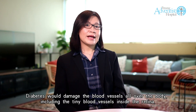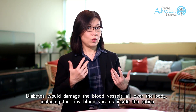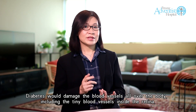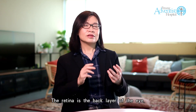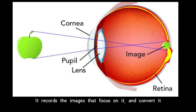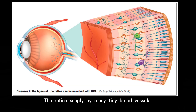Diabetes damages the blood vessels all over the body, including the tiny blood vessels inside the retina. The retina is the back layer of the eye — it functions like a sensor in a digital camera. It records the images focused on it and converts them into electrical signals that allow us to see. The retina is supplied by many tiny blood vessels.